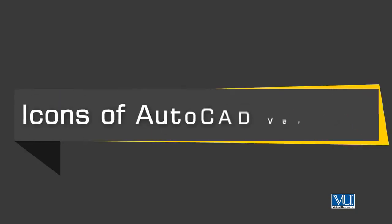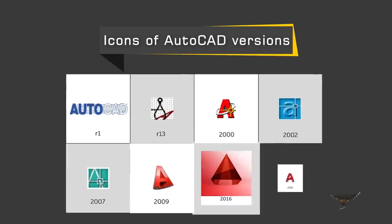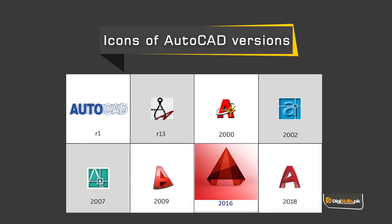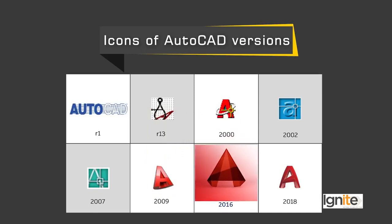Now we can see different icons. With the passage of time, right from 1982 till now, products have been released one by one with different icons — this shows how AutoCAD has evolved. In 2016, the version we are going to use, we can see its icon. The latest 2018 icons are also available.